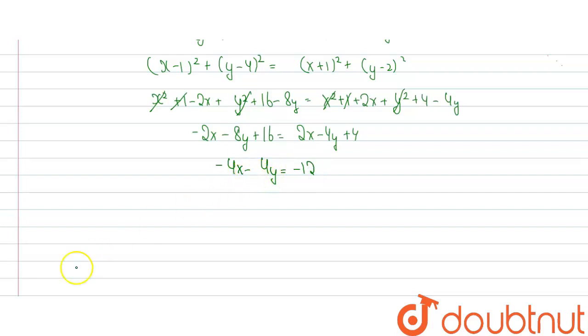Now what we will do is we will take minus 4 common from this term we will get x plus y and minus 4 common from this we will get 3. Minus 4 we can cancel out minus 4 so we will get x plus y is equal to 3.